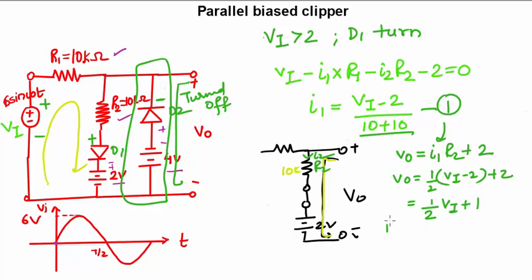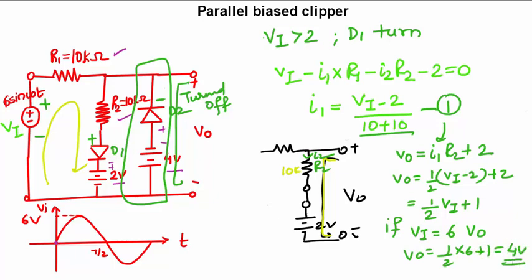If the input voltage Vi is 6 volts, then Vo = ½ × 6 + 1 = 4 volts. So the maximum peak value: when your input is 6 volts, your output will go to 4 volts. This is how it can be done.